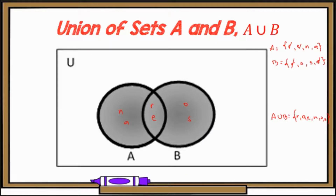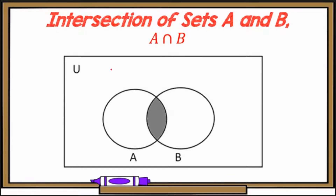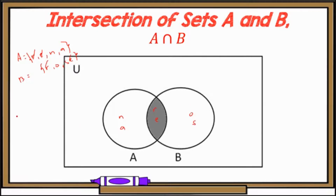Now let's move to intersection using the same example. Set A contains R, E, N, A and set B contains R, O, S, E. For the intersection, we look for what is common to both. N and A remain in set A's region, O and S remain in set B's region. For the intersection of A and B, we look at the shaded overlapping portion of the two circles. We have R and E.